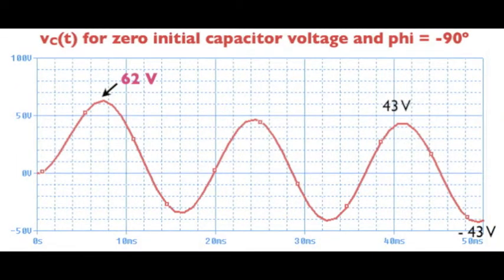Next, change one thing. Suppose that I happen to close that switch when the phi associated with the AC wave is minus 90 degrees. Again, the capacitor voltage ends up at the same steady-state value after a few cycles, but now during that transient, the capacitor experiences up to 62 volts during the transient phase.